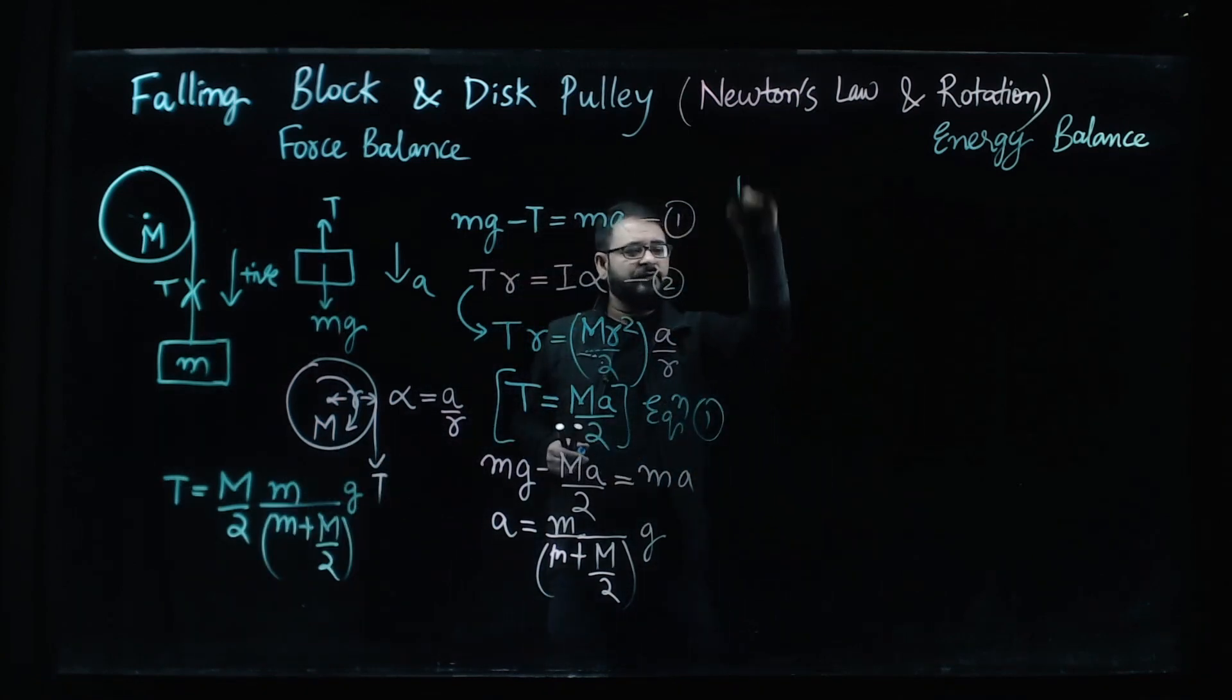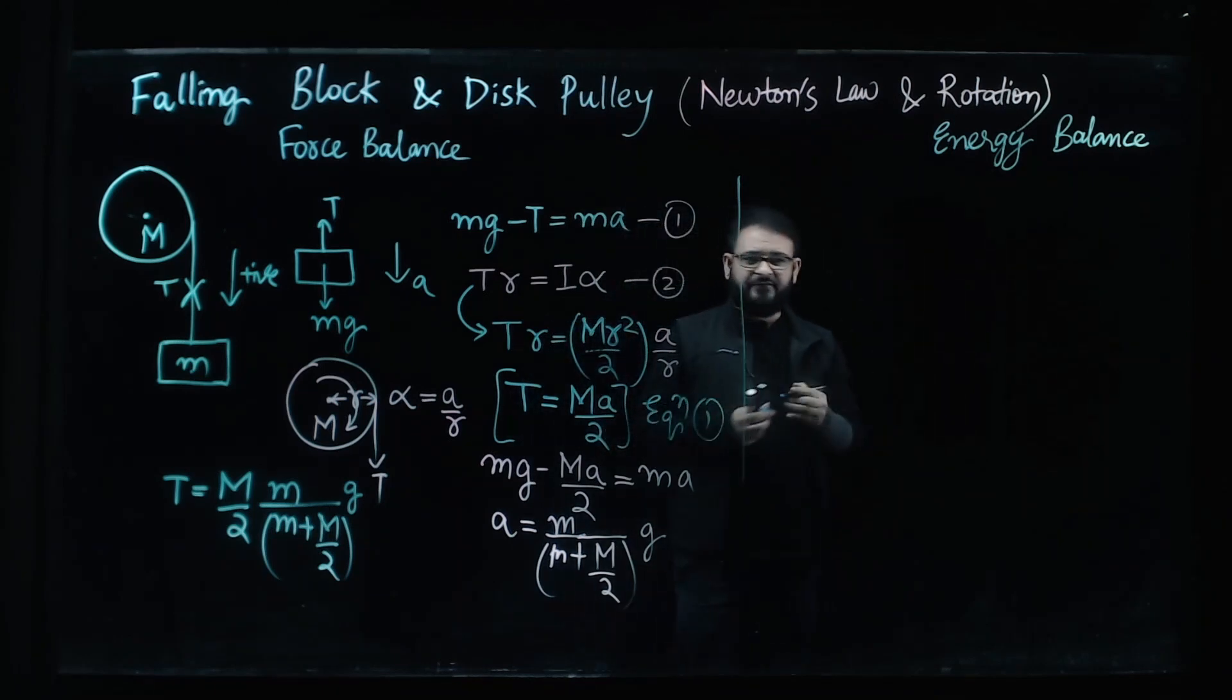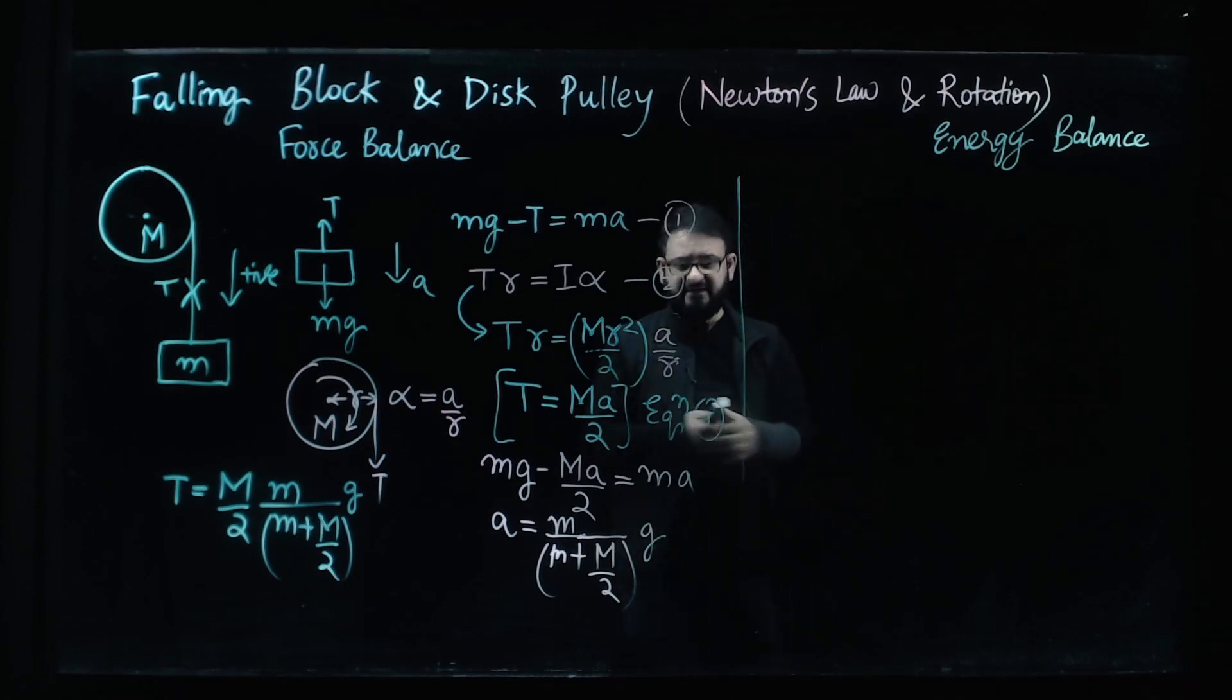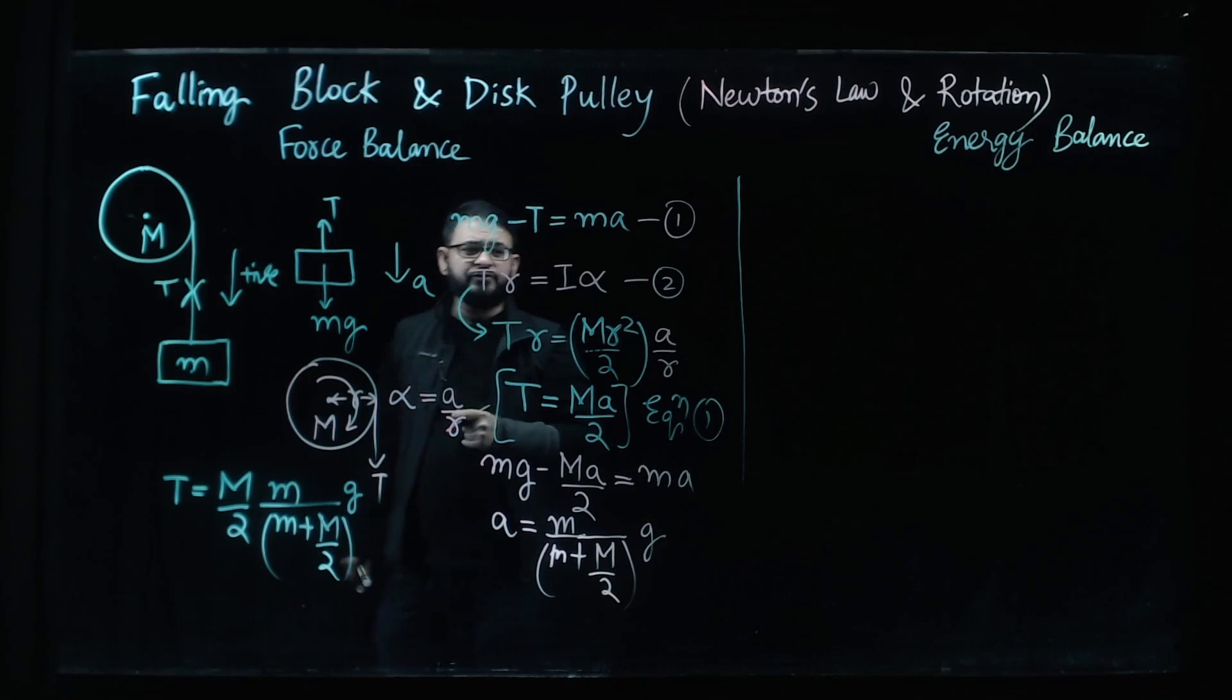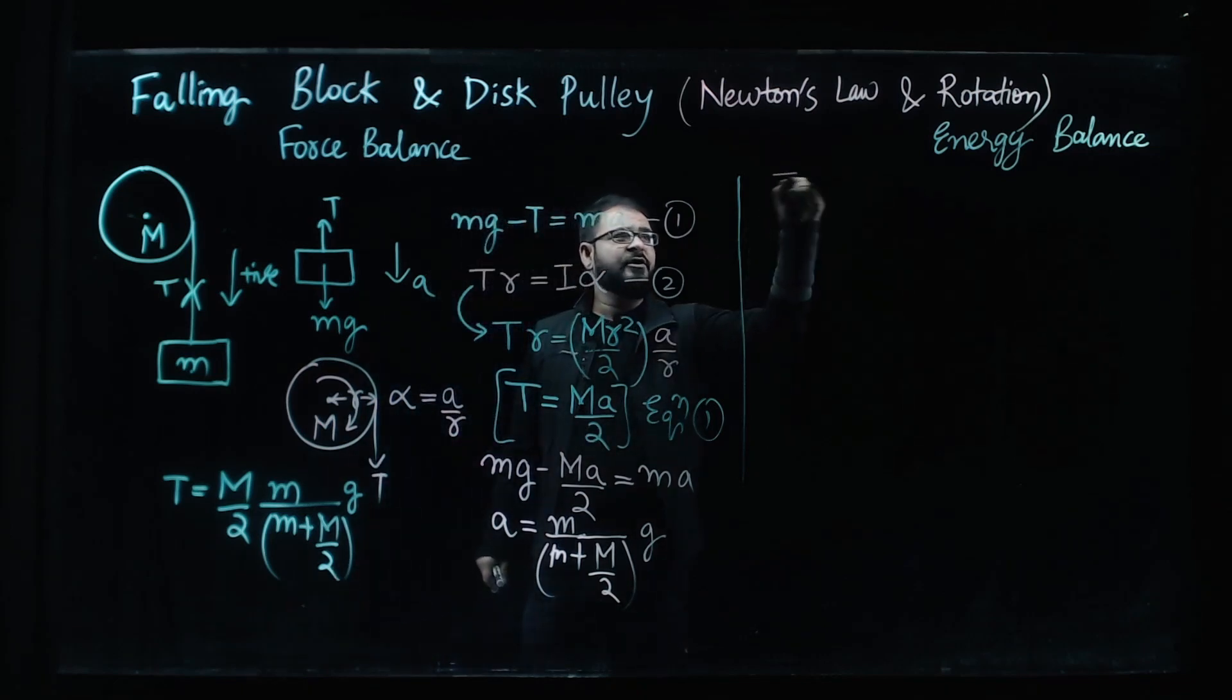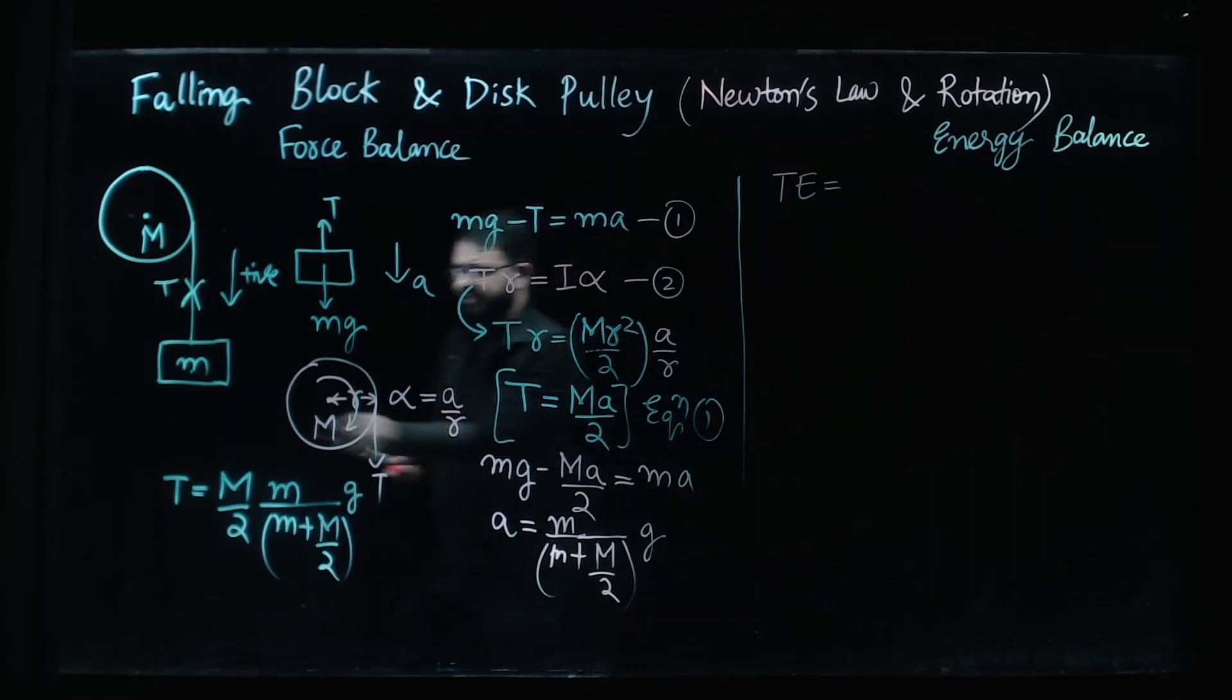Now here this side we are going to use energy balance approach. In order to consider the energy balance approach again the action is happening downwards so we are going to take everything downwards positive and now what we are going to do is we are going to write total energy of this system.